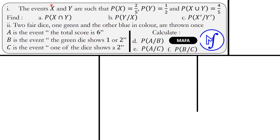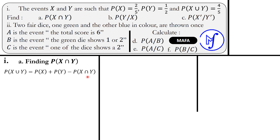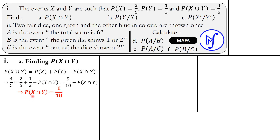We begin with Roman 1 of the equation, and part A says we should find the probability of X intersection Y. We relate P(X∩Y) with P(X), P(Y), and P(X∪Y) using the addition formula. Fitting in the respective values: 4/5 = 9/10 − P(X∩Y), so P(X∩Y) = 9/10 − 4/5 = 1/10.